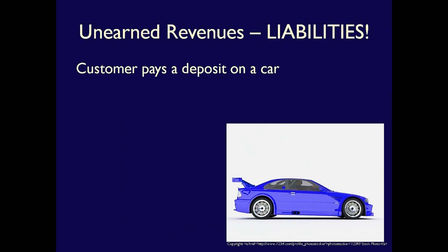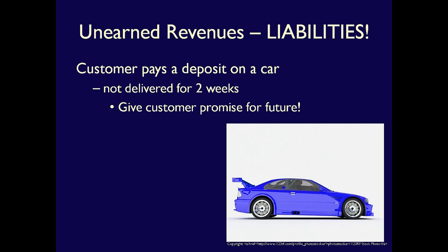Say a customer pays a down payment on a car. The car's not going to be delivered for two weeks, but the customer has already given your company cash. Your cash goes up because your assets go up, but you've given nothing back to the customer except a promise to give them a car in the future. How do we record a future promise? That's a liability — it's a liability because you owe the customer something in the future, an obligation that will be settled when you deliver the car.